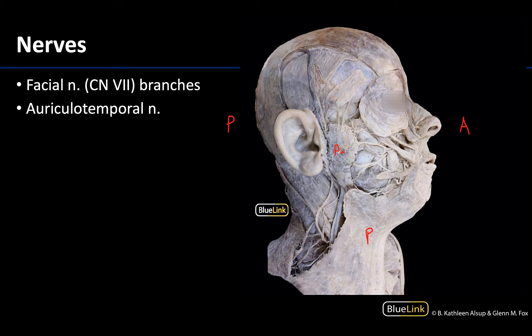You can see a small nerve branch extending superiorly, nestled between the superficial temporal vein and superficial temporal artery. This is the auriculotemporal nerve, which is a branch of the mandibular division of the trigeminal nerve, or often we just refer to that as V3.